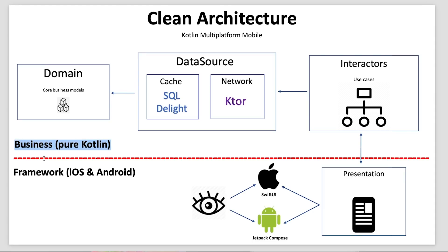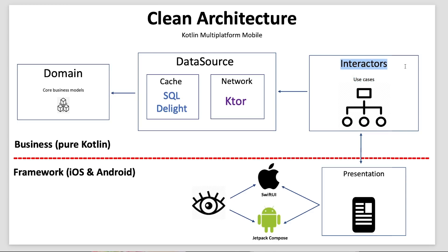I built a diagram to explain it. The first main separation is the business logic — which is pure Kotlin — and the framework, which is iOS and Android specific. In the framework section we basically just have the UIs: the observer is the end user looking at either the SwiftUI iOS app or the Jetpack Compose Android app. That's the presentation layer. The presentation layer talks with the rest of the code through use cases, also called interactors. The presentation gets its data from these use cases.